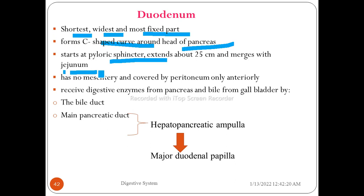The duodenum extends about 25 centimeters, making it the shortest part, while the jejunum and ileum are measured in meters. The duodenum has no mesentery and is covered by peritoneum only anteriorly. It receives digestive enzymes from the pancreas via the pancreatic duct and bile from the gallbladder via the bile duct.